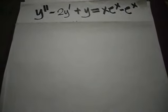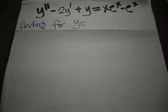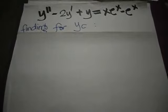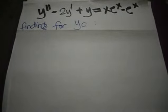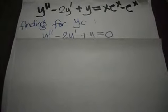In finding the complete solution for this problem, let's find first the yc. So in finding yc, let's first consider the homogeneous part of the equation. We rewrite the equation in this form: y'' - 2y' + y = 0.